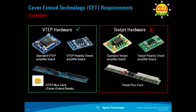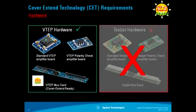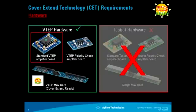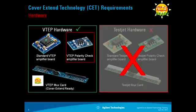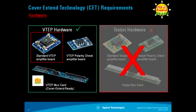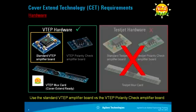Important: please take note that the test check hardware will not work with Cover S10. For Cover S10, always use the standard VTAP Amplifier Board. Only in situations where the standard VTAP Amplifier Board cannot be installed due to small device geometry or mechanical space constraints can the VTAP Polarity Check Amplifier Board be used. The standard VTAP Amplifier Board has better performance, so it is strongly recommended whenever possible.